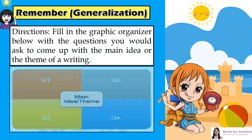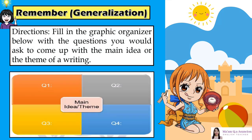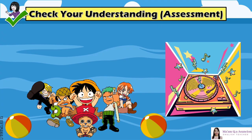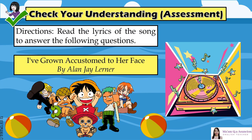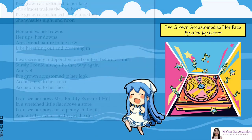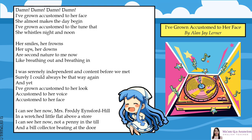Directions: Fill in the graphic organizer below with the questions you would ask to come up with the main idea or the theme of a writing. Directions: Read the lyrics of the song to answer the following questions. 'I've Grown Accustomed to Her Face' by Alan J. Lerner. Damn, damn, damn, damn. I've grown accustomed to her face. She almost makes the day begin. I've grown accustomed to the tune that she whistles night and noon. Her smiles, her frowns, her ups, her downs.